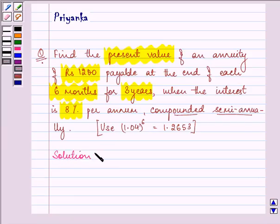Let us write down firstly whatever is given to us. We are given the semi-annual installment, that is R, as Rs. 1200.